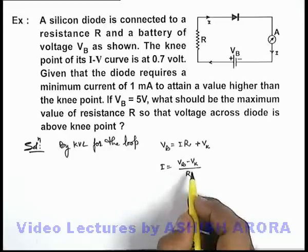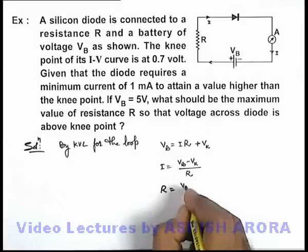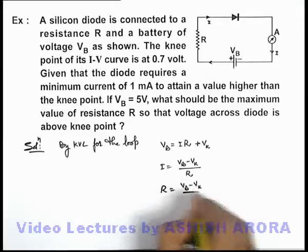Now we are required to find the value of R, so this resistance can be written as V_B minus V_K over I.